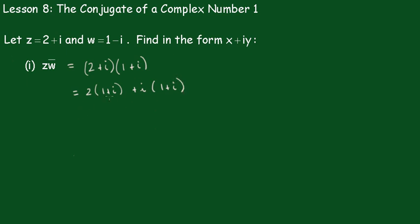I'm doing it the longer way just to avoid any error. So this becomes 2 plus 2i plus i. Now i times i is minus 1. And that gives me 1 plus 3i and that is in the form of x plus iy.